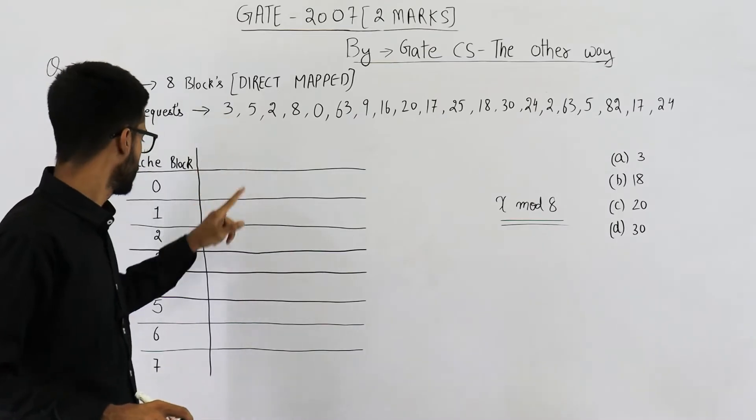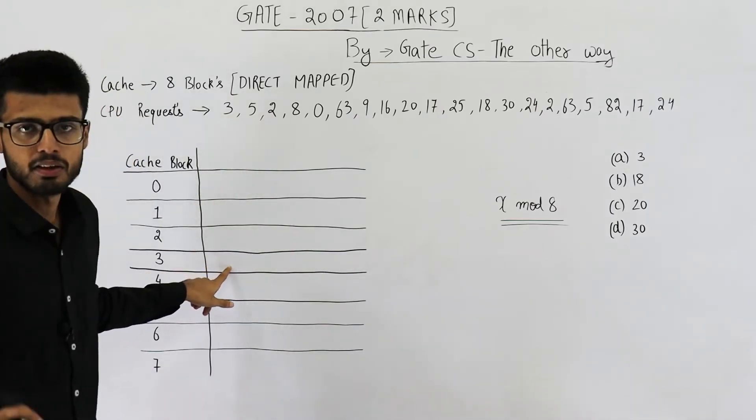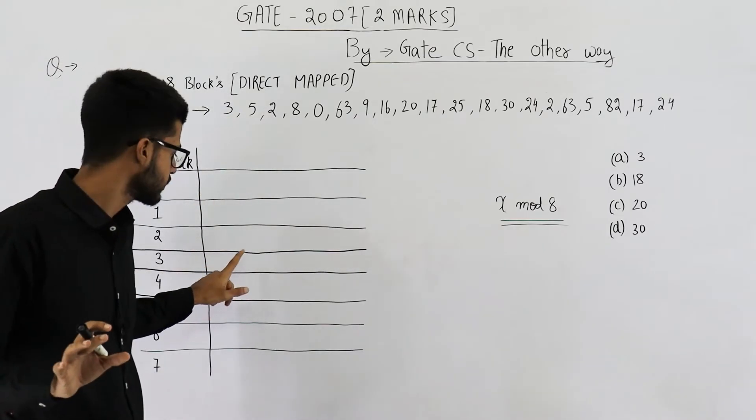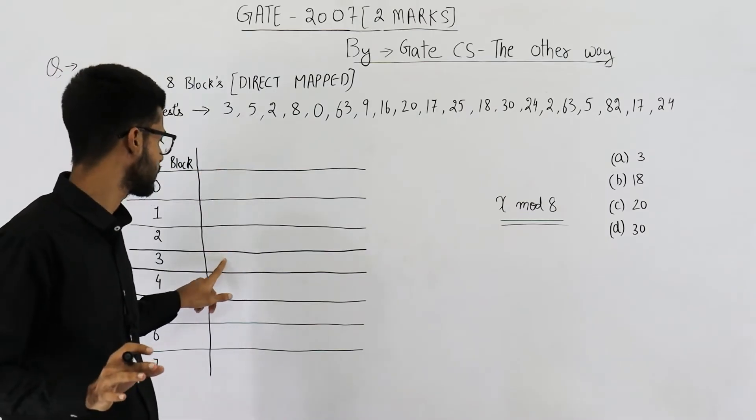You exactly know where a cache block will get mapped. For example, this 3 will go into this cache line. So you don't have a choice. It's fixed that 3 will be placed here.